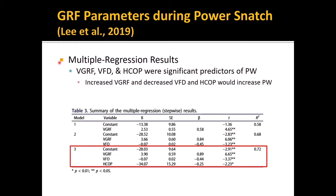Multiple regression results: Model 3 is selected as it shows the highest R-squared value. In Model 3, three significant parameters affect power during the power snatch: VGRF, VFD, and H-COP were identified as significant predictors of power. More specifically, increased VGRF, and decreased VFD and H-COP would increase power in the power snatch.